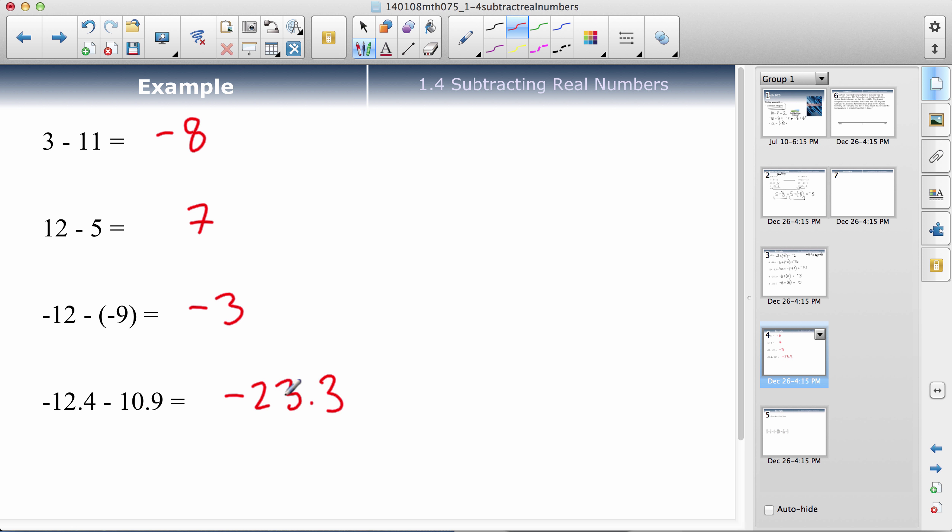So just, you can do them either way you want. But if you're doing them with that change, add the opposite. Like this one would be negative 12 plus, the negative 9 changes to a positive 9. Back to those rules. Different signs. So I subtract. 12 take away 9 is 3. The one furthest from 0 is this one. So that's a sign that it gets.